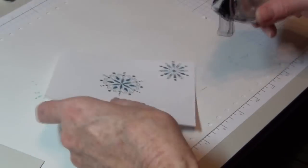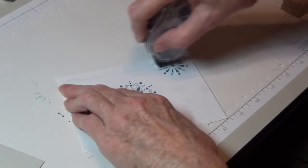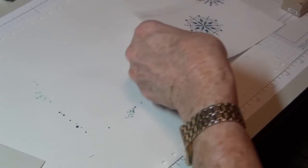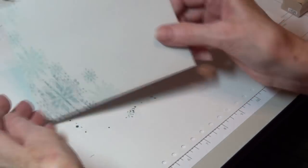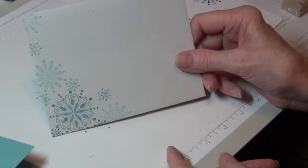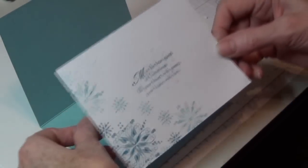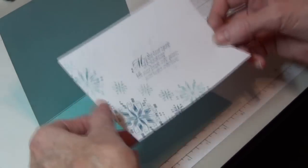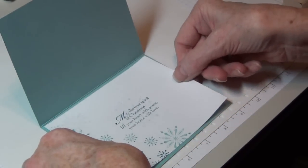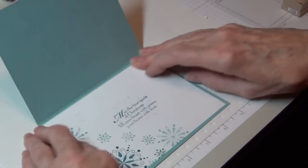I'm going to take my tape runner and place that on the inside of my card. But I want to show you I always stamp my envelopes as well. And I did this exact same thing that you just saw me do on this liner. Can you see how lovely that shows through? Line that up and voila.